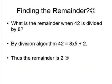For example, if 42 is divided by 8, what will be the remainder? 42 can be expressed as 8 × 5 + 2, thus the remainder is 2.